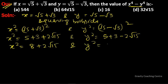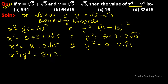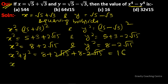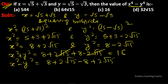So x squared equals 8 plus 2 root 15 and y squared equals 8 minus 2 root 15. Taking their sum: x squared plus y squared equals 16 (the 2 root 15 terms cancel). Taking their difference: x squared minus y squared equals 4 root 15.